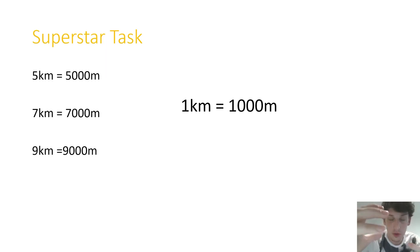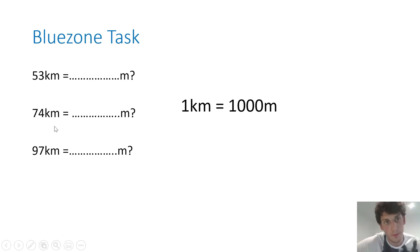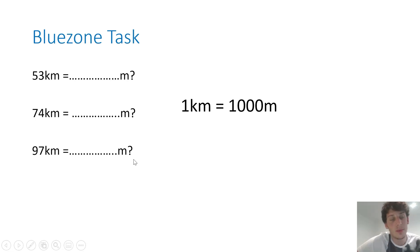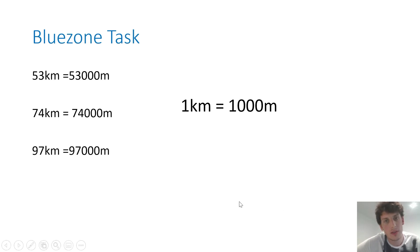If you really struggled, please don't worry — make sure you send me an email so I can provide you with that extra support. We're now going to move on to the blue task. Blue zone, you are going to do exactly the same thing — convert these kilometers into meters. How many meters are in 53 kilometers? How many meters are in 74 kilometers? How many meters are in 97 kilometers? Please pause the video, complete that task, and then press play when you're ready. In 53 kilometers, there are 53,000 meters. In 74 kilometers, there are 74,000 meters. And in 97 kilometers, there are 97,000 meters.